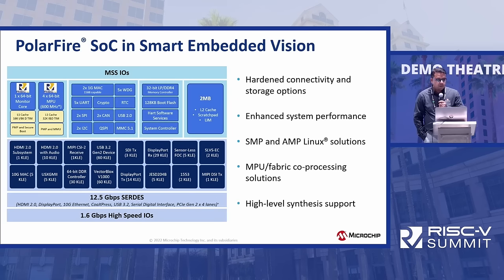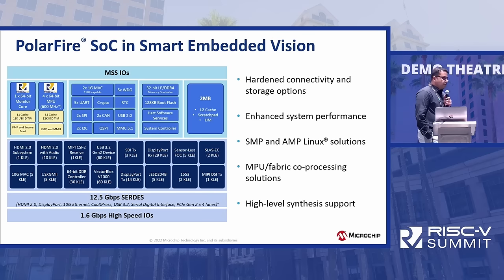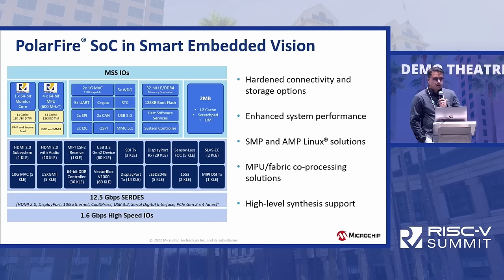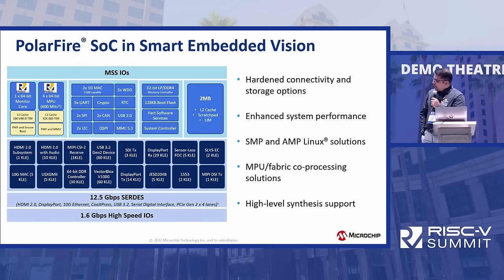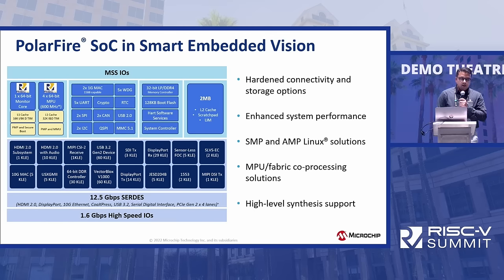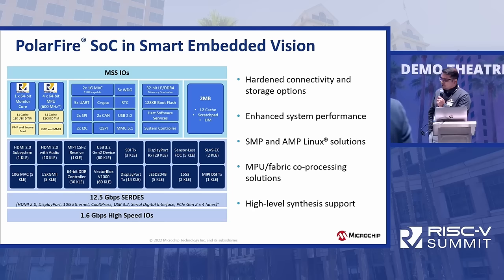PolarFire SOC in Smart Embedded Vision — what you see here is a block diagram of our SOC FPGA. It's based on a 5-core 64-bit RISC-V processor subsystem. All the light blue blocks are hard-end IPs available on the device. We have high-speed interfaces, dual gigabit Ethernet, PCI interface, and high-speed IOs and transceivers — up to 1.6 Gbps IOs and up to 12.5 Gbps transceivers. The dark blue blocks are part of our FPGA — soft IPs you can port on our FPGA fabric.